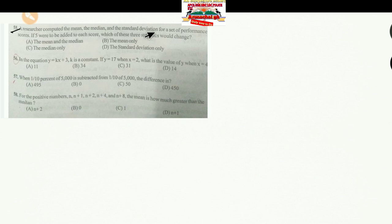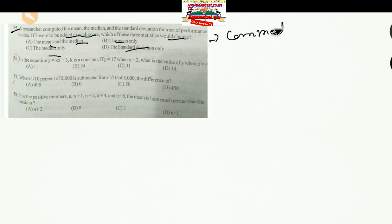Question 55: A researcher computed the mean, median, and standard deviation of a set of performance scores. If 5 were added to each score, which of the 3 statistics would change — mean and median, mean only, median only, or standard deviation? If you know the answer, please comment below.